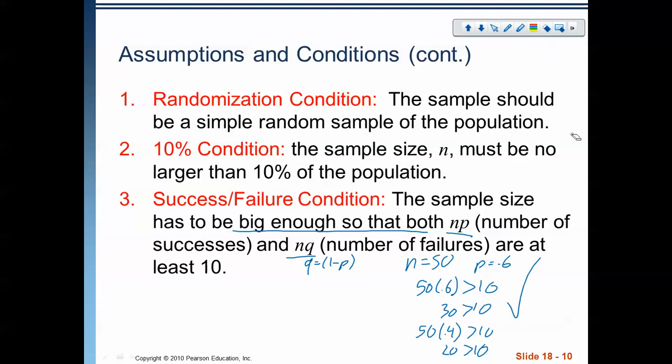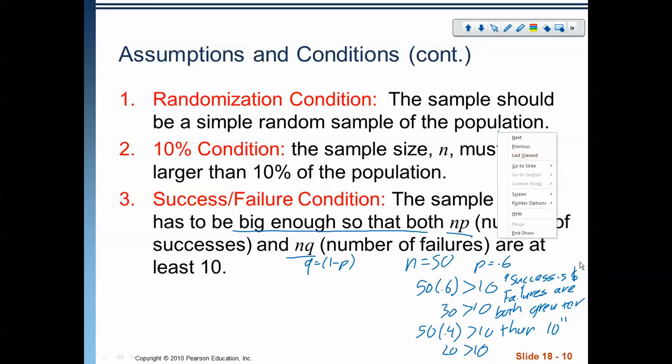Or even better, rather than writing a check mark, we write a quick sentence that says successes and failures are both greater than 10. And as long as we can say that successes and failures are both greater than 10, it's okay to say that the success failure condition has been met.